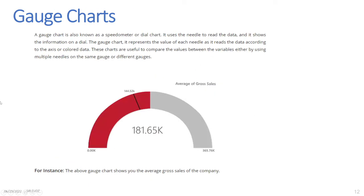Gauge Charts: A gauge chart is also known as a speedometer or dial chart. It uses a needle to read the data and shows the information on a dial. The gauge chart represents the value for each needle as it reads the data according to the axis or colored data. These charts are useful to compare values between variables either by using multiple needles on the same gauge or different gauges. For instance, the gauge chart shown displays the average gross sales of a company.